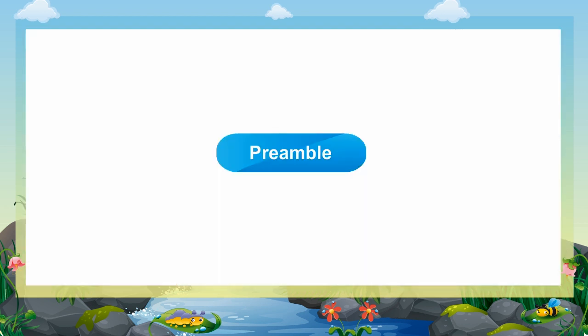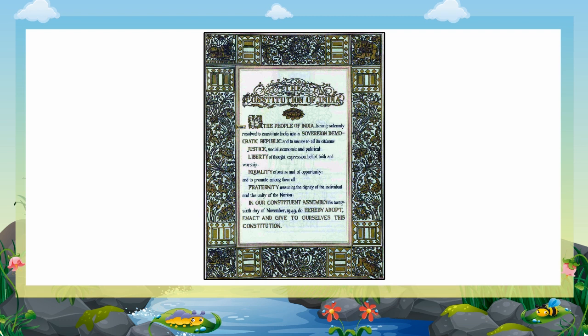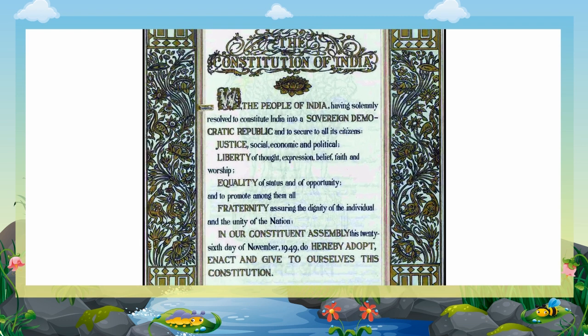Preamble. The preamble as it is presented in the Constitution of India reads: We, the people of India, having solemnly resolved to constitute India into a sovereign, socialist, secular, democratic republic and to secure to all its citizens.